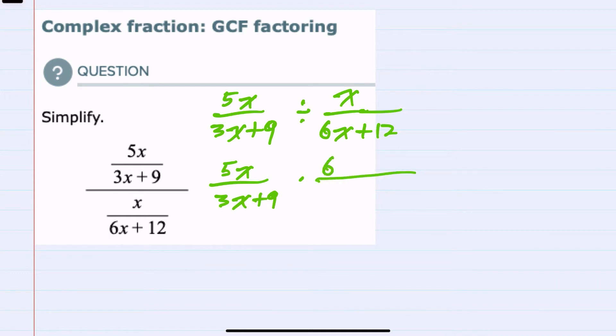So moving the 6x plus 12 to the top and the x to the bottom. And now that we have multiplication, we can cross-cancel. However, we need to factor everything completely so that we can see which factors will cancel.